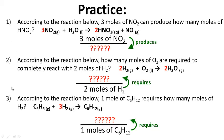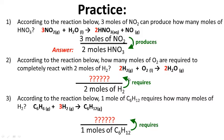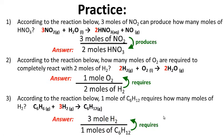Practice — try to answer these three questions. Question 1: according to the reaction, 3 moles of NO2 can produce 2 moles of HNO3. Question 2: how many moles of O2 are required to completely react with 2 moles of HNO3? The answer is 1 mole of O2. Question 3: 1 mole of C6H12 requires 3 moles of H2. Hopefully you did okay on those.